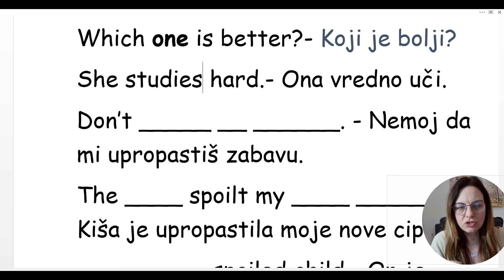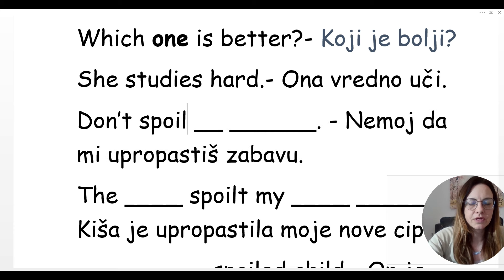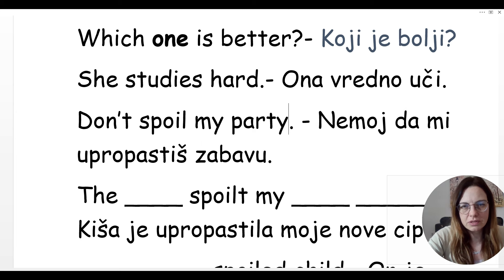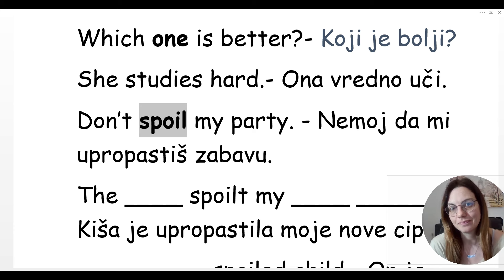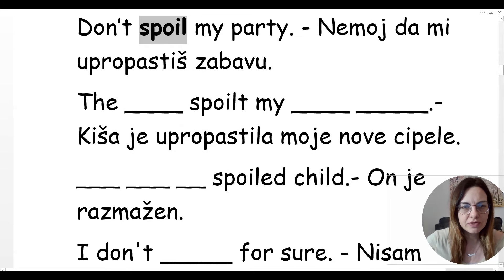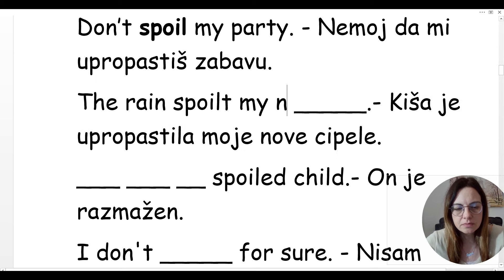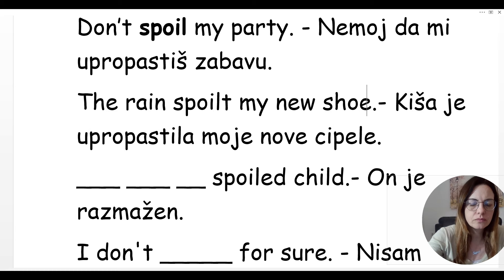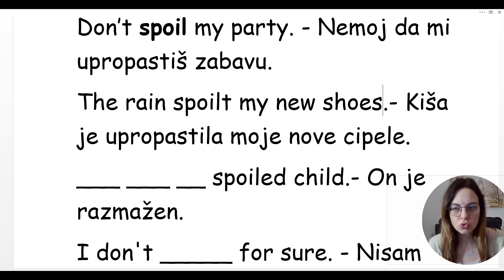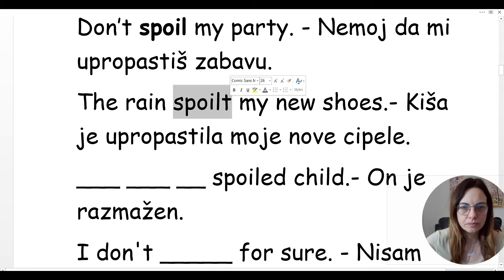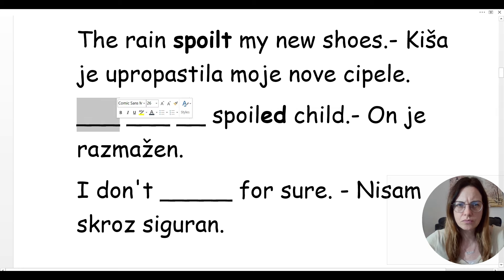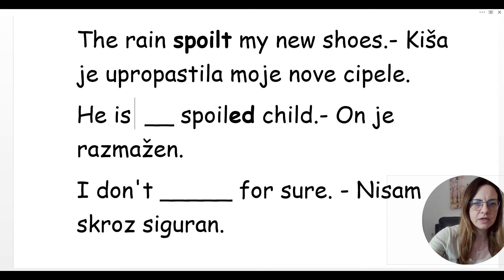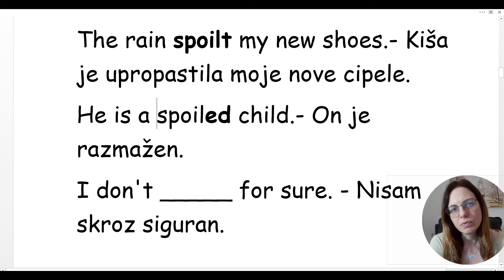Nemoj da mi upropastiš zabavu — don't spoil my party. To spoil — upropastiti, okvariti. Spoilt kao pridev se koristi kada kažemo da je neko dete razmaženo. Kiša je upropastila moje nove cipele — the rain spoiled my new shoes. Spoilt ili spoiled — on je razmažen: he is a spoiled child.